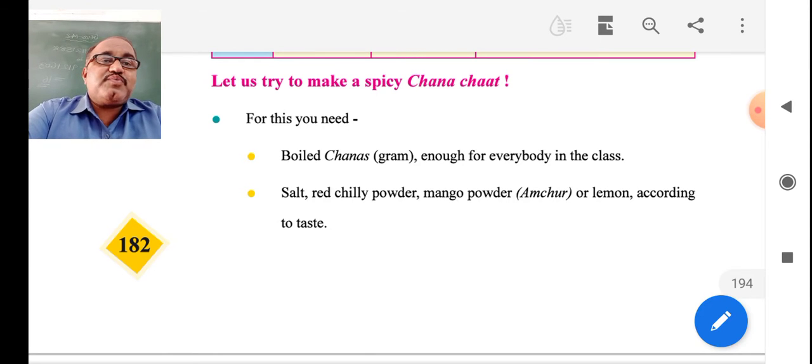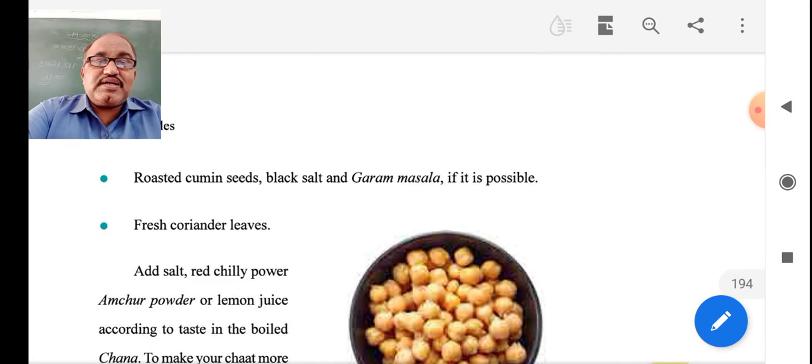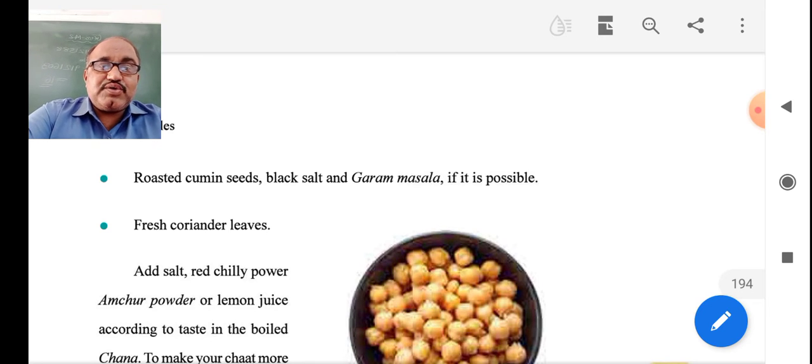Let us try to make spicy chana chaat. You have to take boiled chana, enough for everybody in the class. Salt, red chili powder, mango powder, amchur, lemon according to taste, roasted cumin seeds, black seeds, black salt, garam masala, fresh coriander leaves.